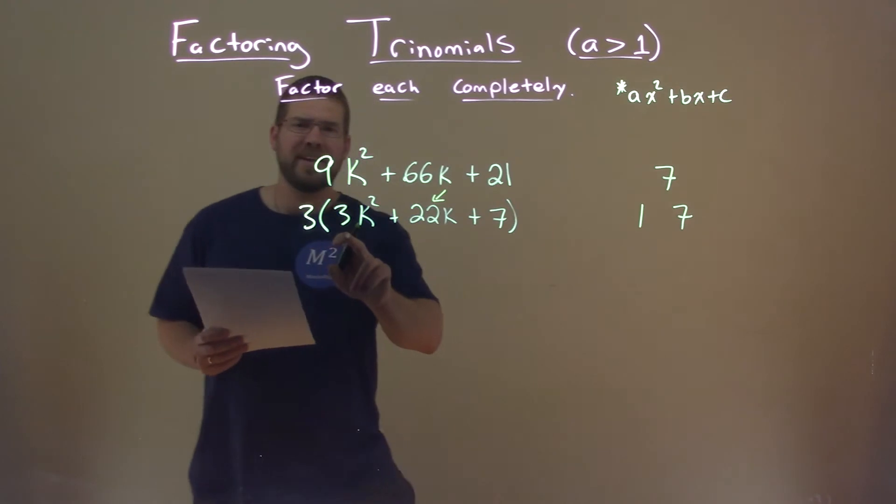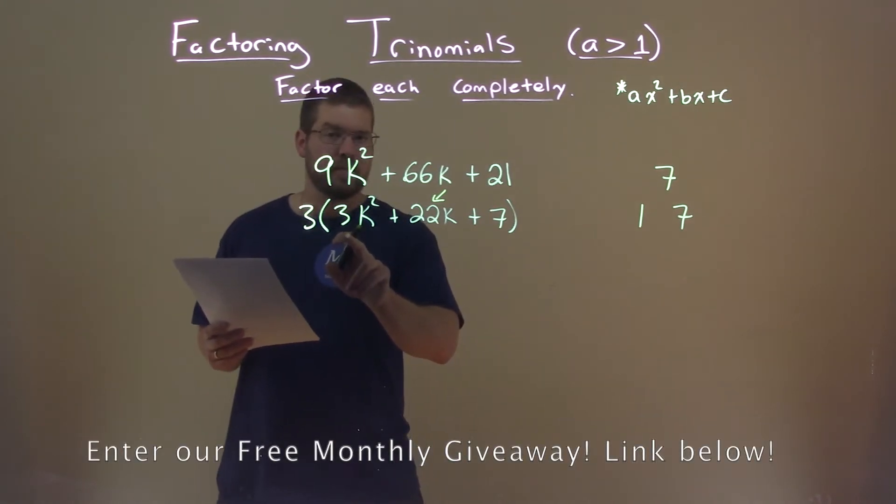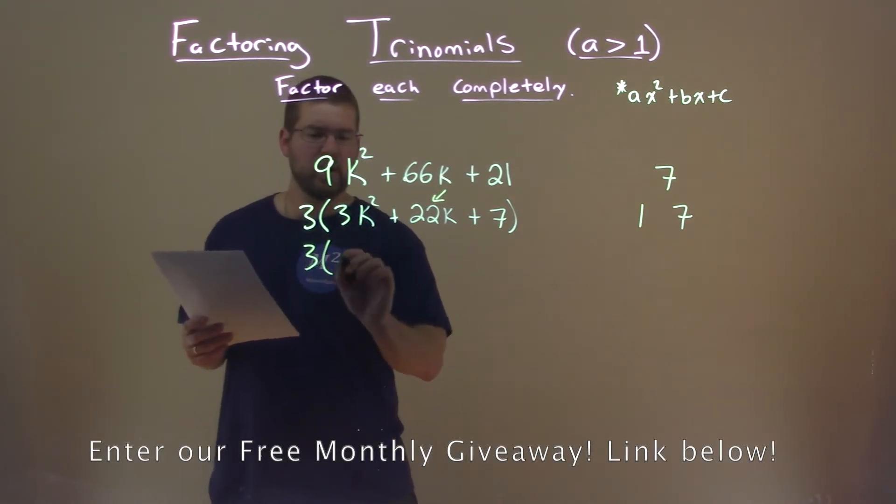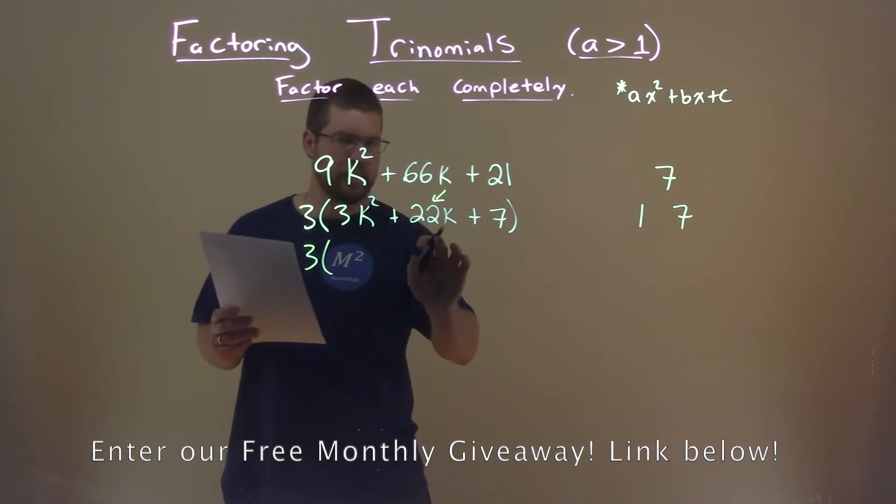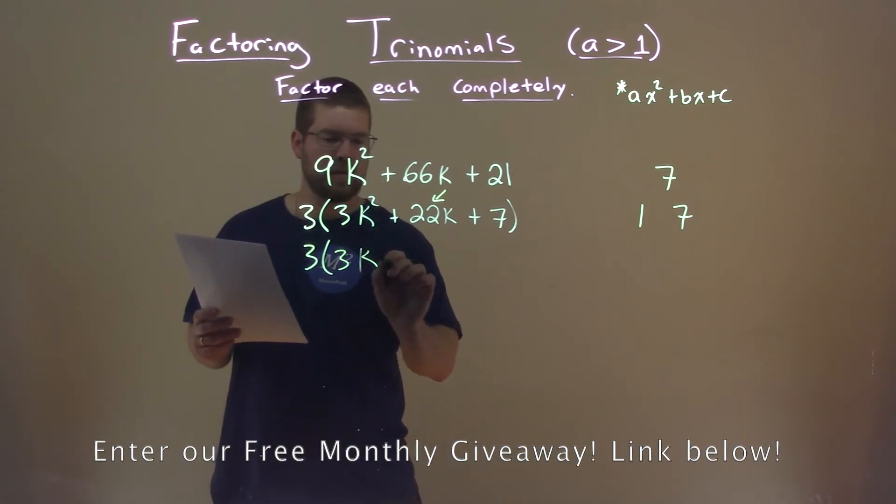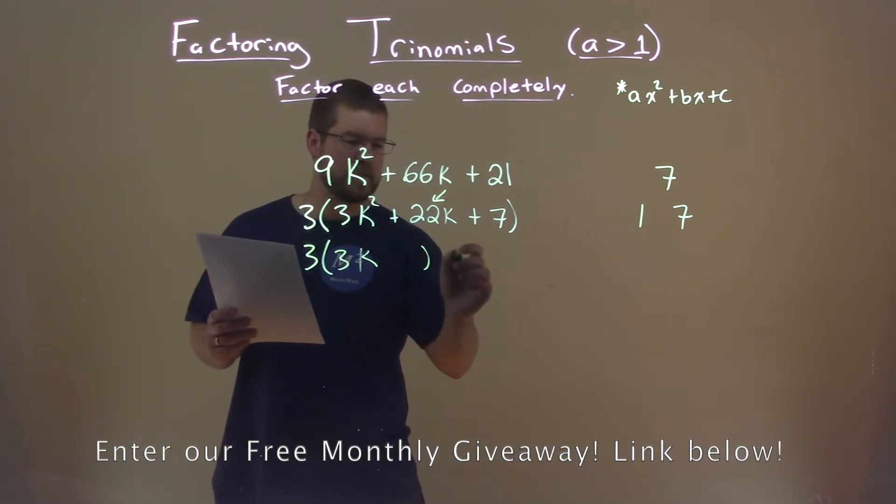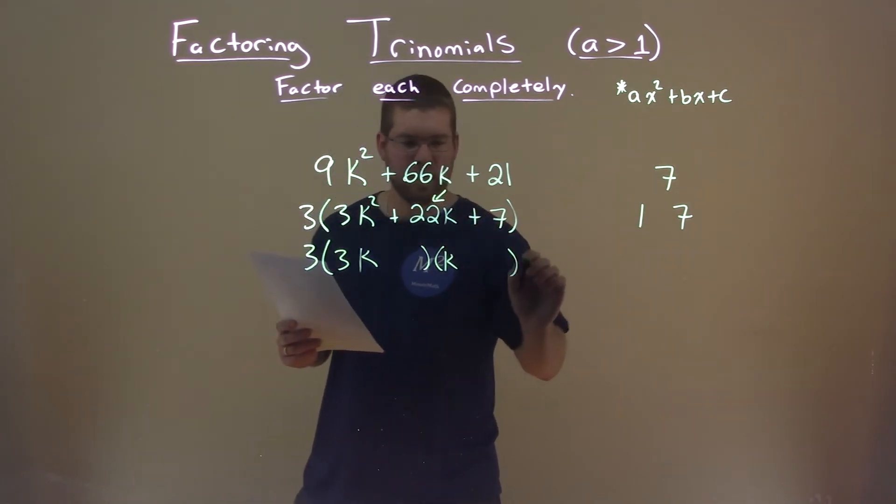Our a value is a prime number here, it's 3. So we know when we factor this inside part, it's going to be some 3k times, or plus or minus something else, times k, plus or minus something else.